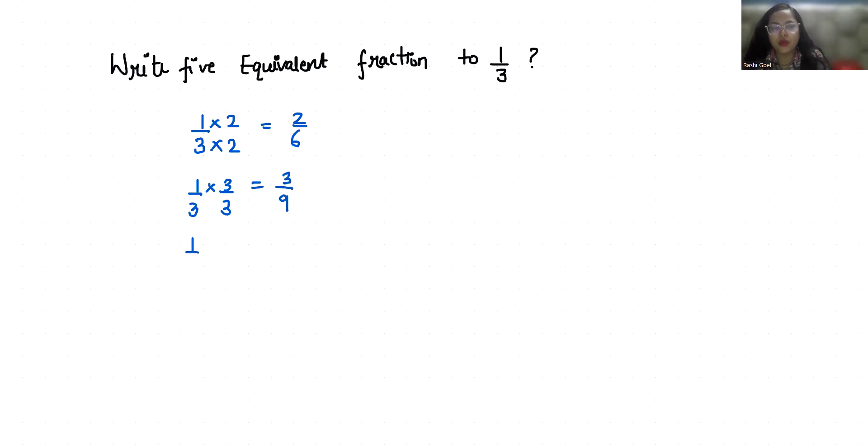If I multiply with 4, so it's 4/12. Now if I multiply by 5 in numerator and denominator, so 5/15. 1/3 times 6 in numerator and denominator is 6/18.